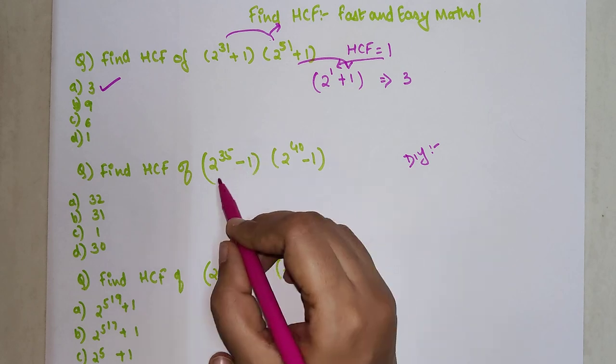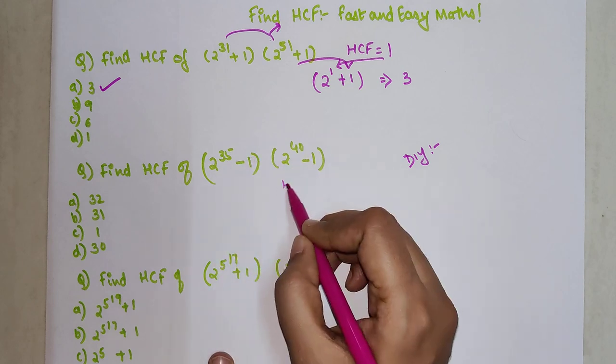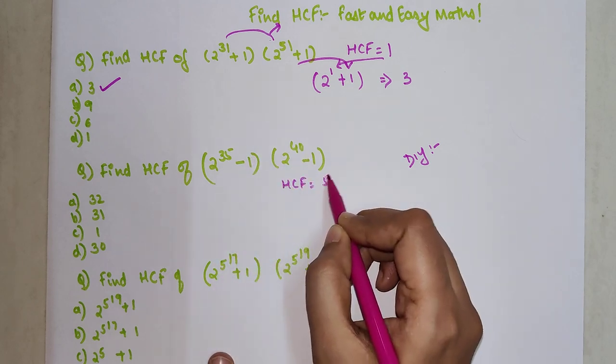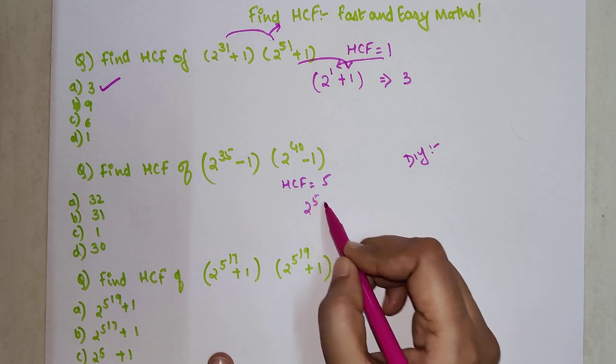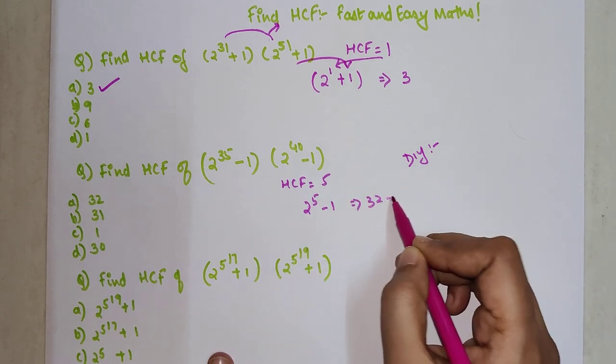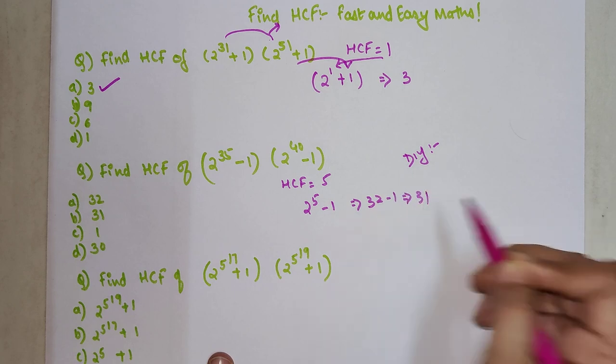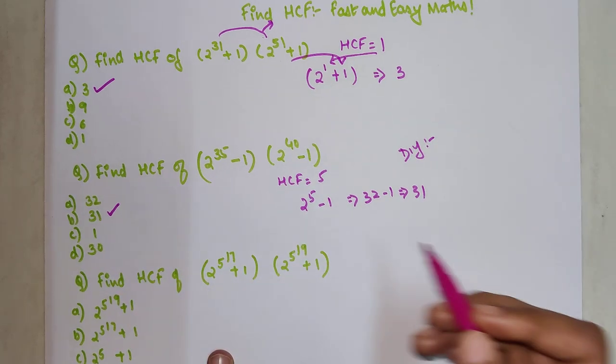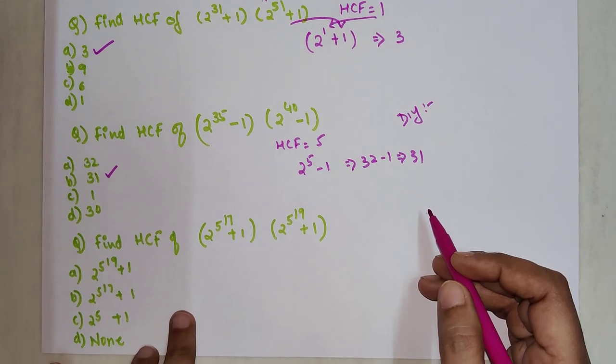For this one, the HCF of 35 and 40 is 5. So I will write 2^5 - 1. 2^5 is 32, minus 1 gets you 31. So option B is the correct option.